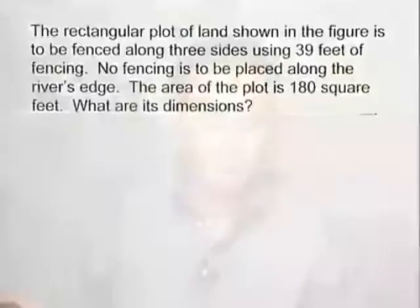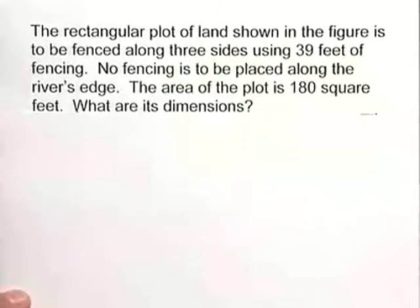Here's another nice word problem. The rectangular plot of land shown in the figure is to be fenced along three sides using 39 feet of fencing. No fencing is to be placed along the river's edge. The area of this plot is 180 square feet. What are the dimensions?